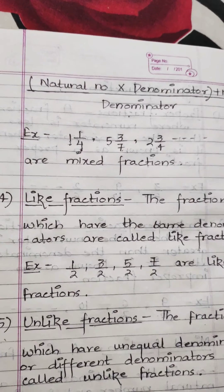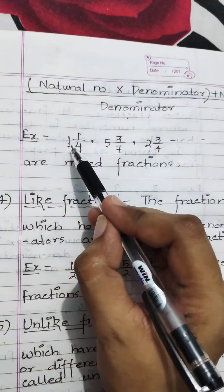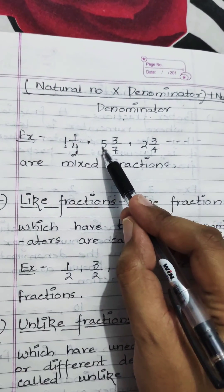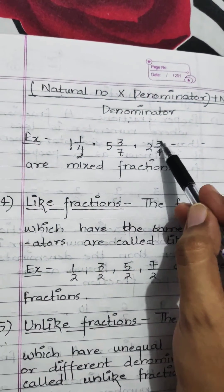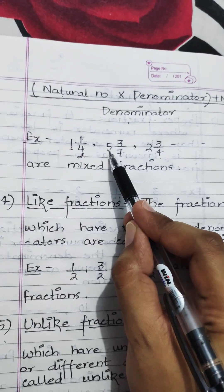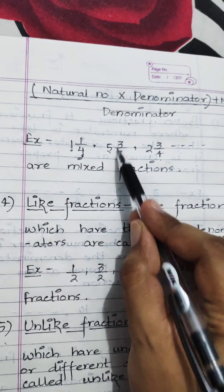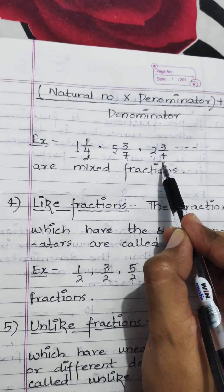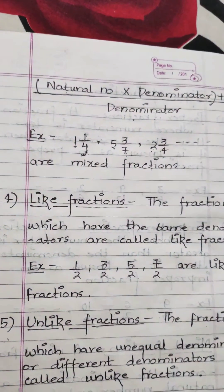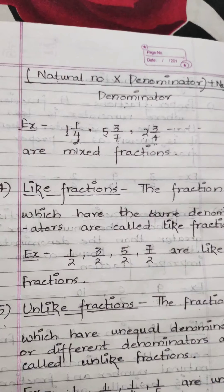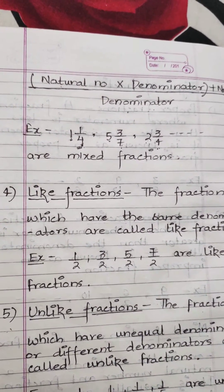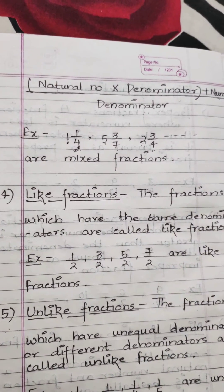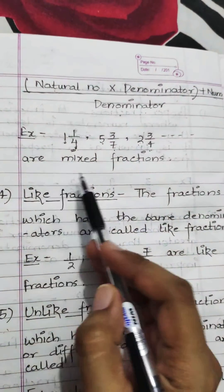For example: one whole one upon four, five whole three upon seven, two whole three upon four. Here, one and five are the natural numbers, three upon seven is a proper fraction, and two is your natural number and three upon four is a proper fraction. So a mixed fraction is always a combination of a natural number and a proper fraction.